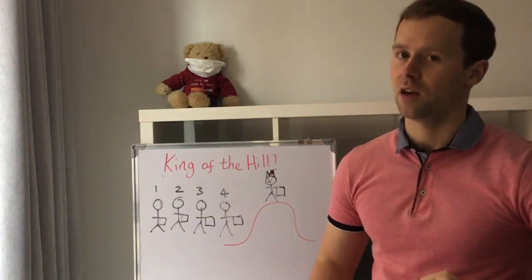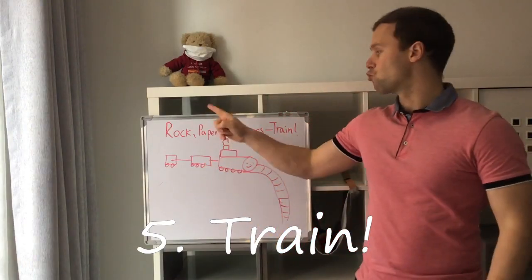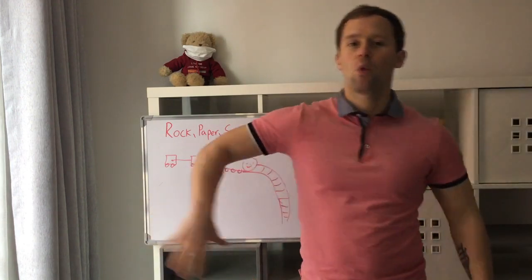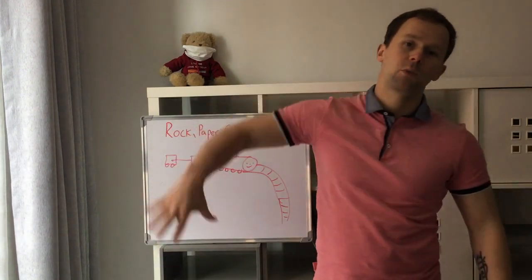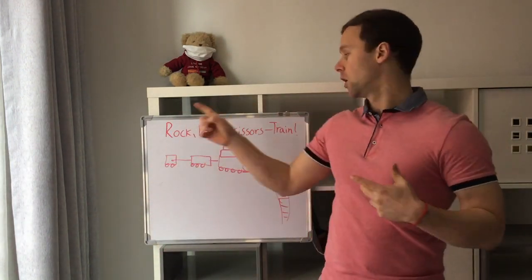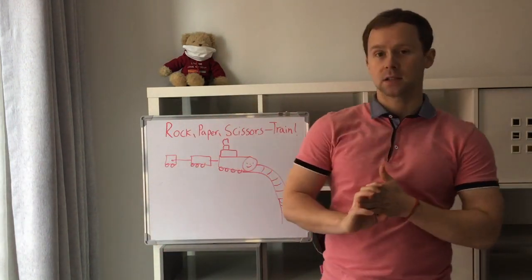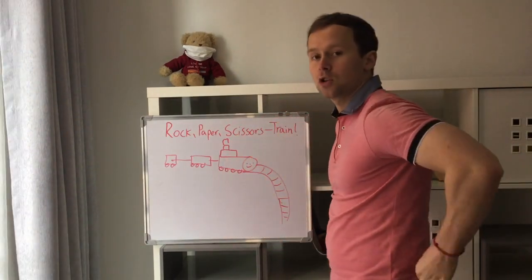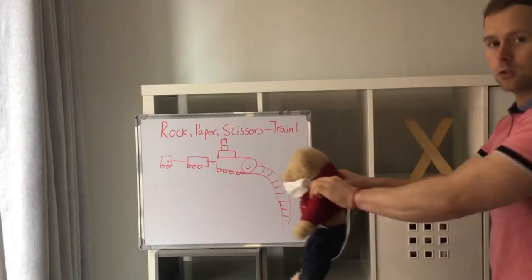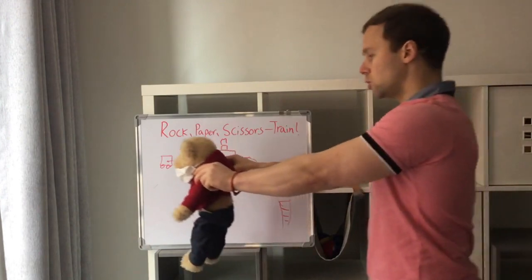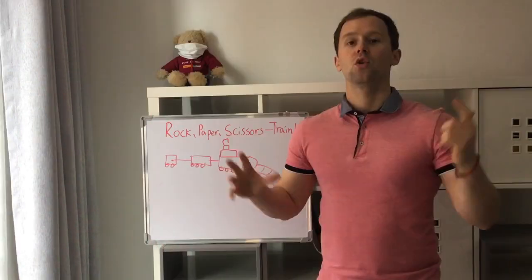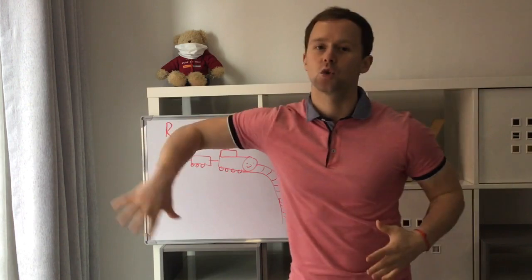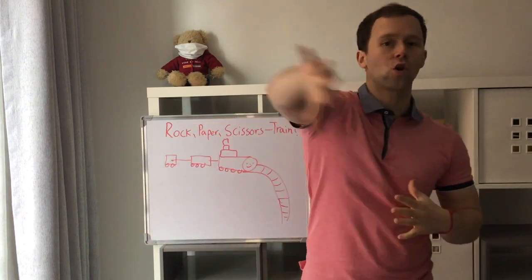Game number five is rock, paper, scissors Train. Students are going to walk around the class practicing their English question and play rock, paper, scissors. This time, if a student is a loser, they will join onto the student that is a winner like a train. You'll keep playing the game until eventually the whole class is one long train.